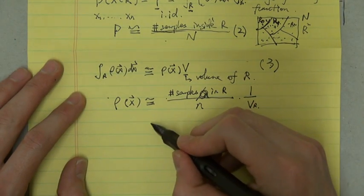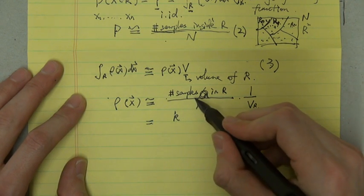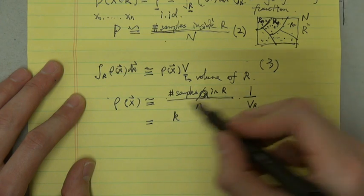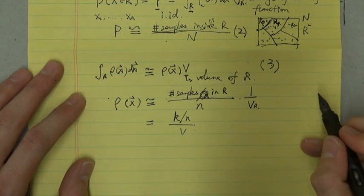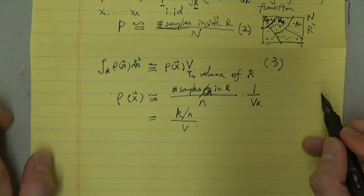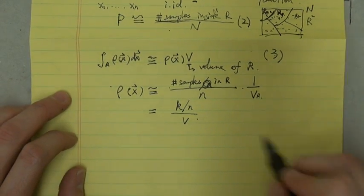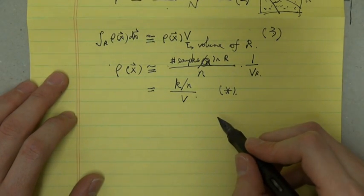And in the following, we can use k to represent the number of samples in R. So the equation can be written in this way. So there are some interesting observations for this equation. First,